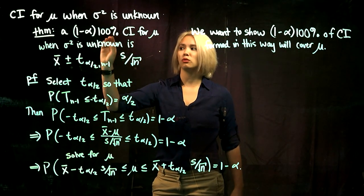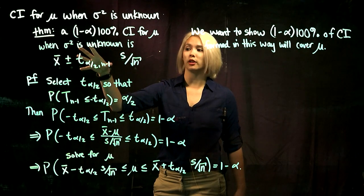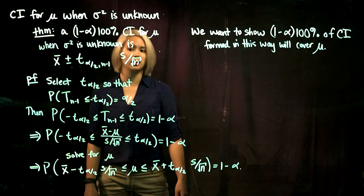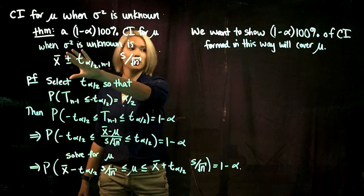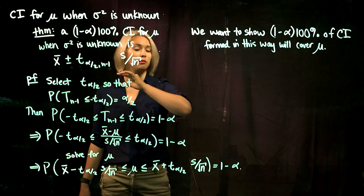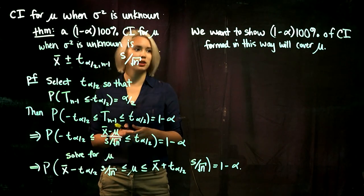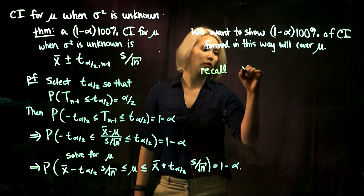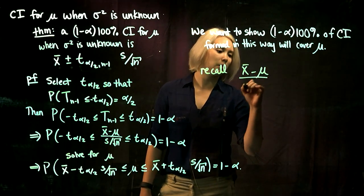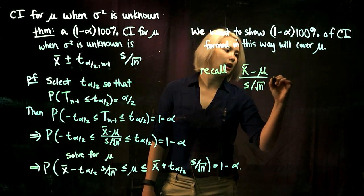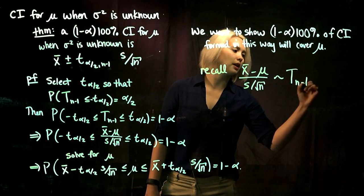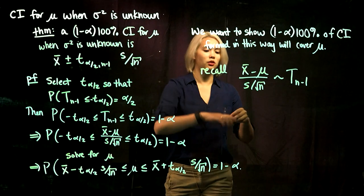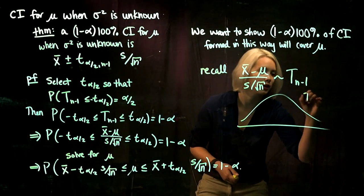So if we want to prove this theorem, essentially what we want to show is that 1 minus alpha times 100% of confidence intervals formed in this way are going to cover mu. We'll do the same thing as usual. Recall that x bar minus mu divided by s over root n has a t distribution with n minus 1 degrees of freedom.